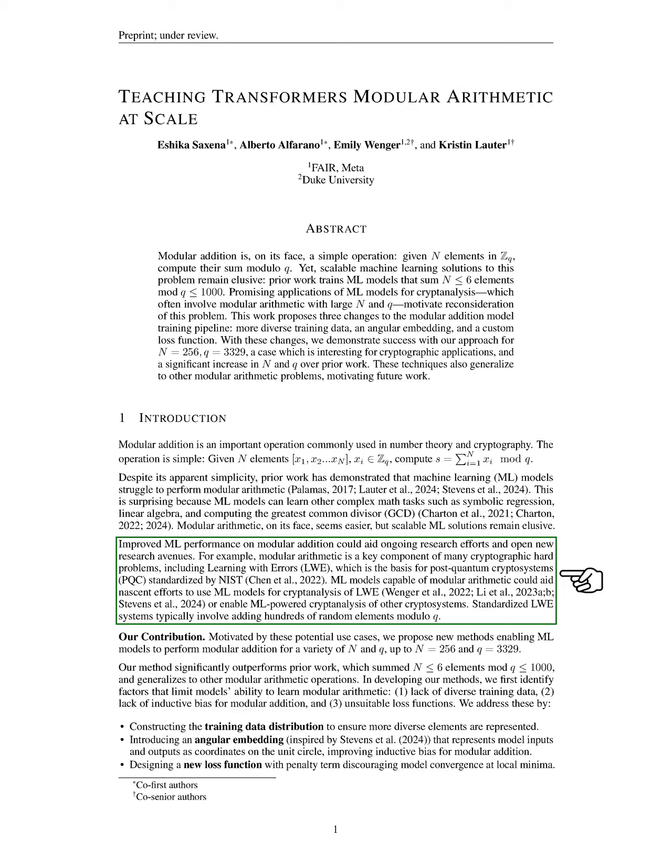Improving machine learning performance in modular addition could significantly benefit research, especially in cryptography, where modular arithmetic plays a vital role in problems like learning with errors, which underpins post-quantum cryptosystems. To address this challenge, we propose new methods that enable machine learning models to perform modular addition effectively for various sizes of elements and moduli, specifically up to 256 elements and a modulus of 3,329.